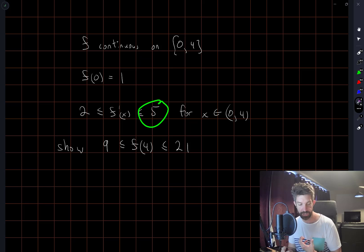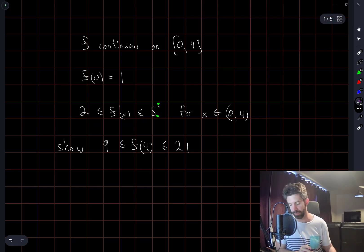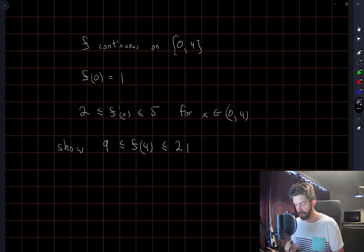I notice the question doesn't say that f is differentiable for all values of x, but given this information, I'm going to assume f'(x) is defined for all values of x. If f'(x) equals its maximum at all values, so f'(x) is always equal to 5...